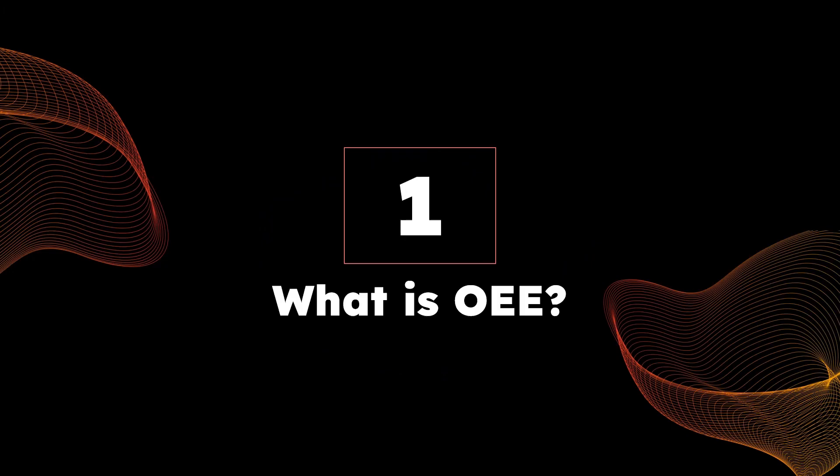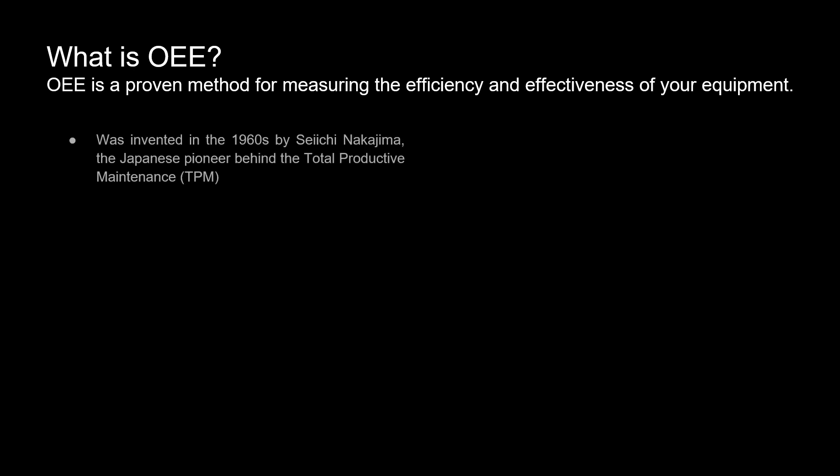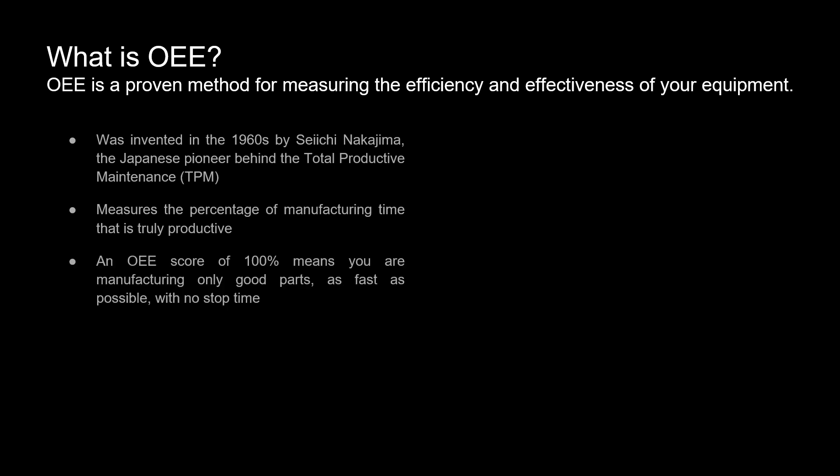So, what exactly is OEE? It's an indicator used to measure just how efficiently your machines are operating. It was created in the 60s by Siichi Nakajima, the brain behind the total productive maintenance strategy. What OEE really measures is the amount of manufacturing time that's truly productive.